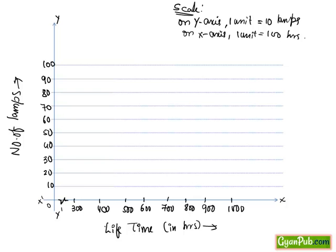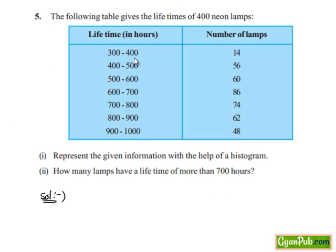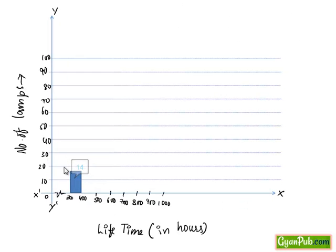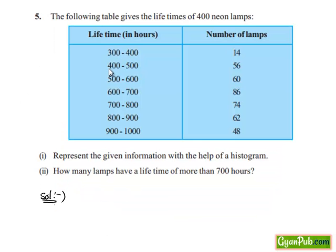Now seeing the problem, for 300 to 400 hours there were 14 lamps. So if we plot the graph here, between 10 to 20, it represents 300 to 400. Here we get the graph as follows, and for 400 to 500 it is 56.